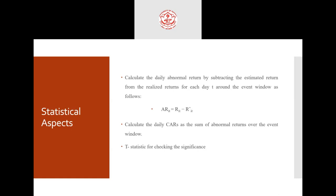Basically, in event study we take an event such as dividends or bonus issues or any stock market announcement, and we collect past data for the estimation window to calculate the normal return. Then we check whether the actual returns are over and above or below the normal return — that is what we call the abnormal return.